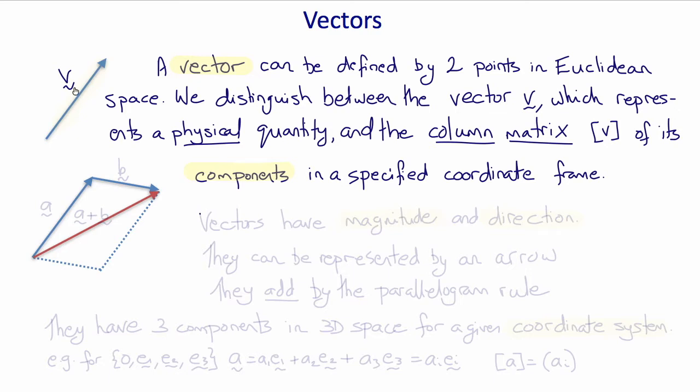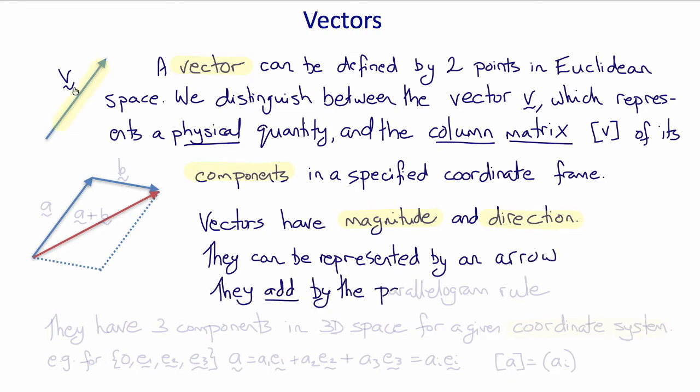A vector has magnitude and direction and can be represented by an arrow. Two vectors add by the parallelogram rule.